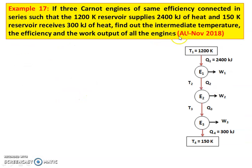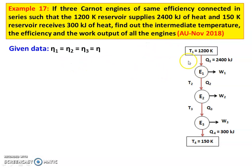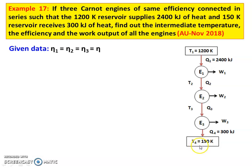Next question, Example number 17, from November 2018. If three Carnot engines of same efficiency are connected in series such that a 1200 Kelvin reservoir supplies 2400 kilojoules of heat and a 150 Kelvin reservoir receives 300 kilojoules of heat, find the intermediate temperatures, efficiency, and work output of all the engines. In this arrangement, T1 is the temperature of the source giving heat Q1 equal to 2400 kilojoules to engine 1. The heat rejected by engine 1 is Q2 at temperature T2, input for engine 2, which produces work W2. Engine 2 rejects Q3 at temperature T3 to engine 3, which produces work W3 and rejects Q4 equal to 300 kilojoules at 150 Kelvin.